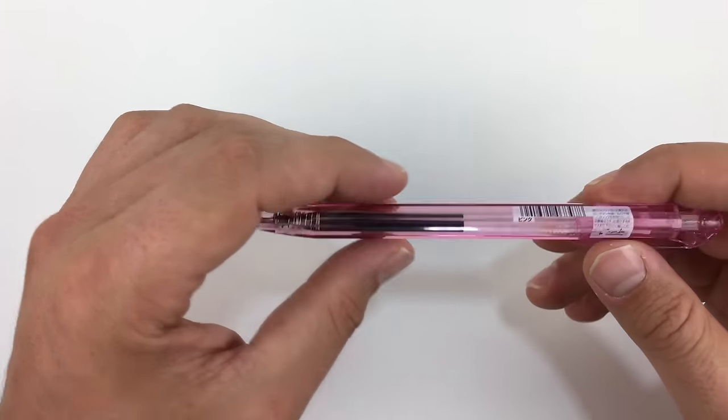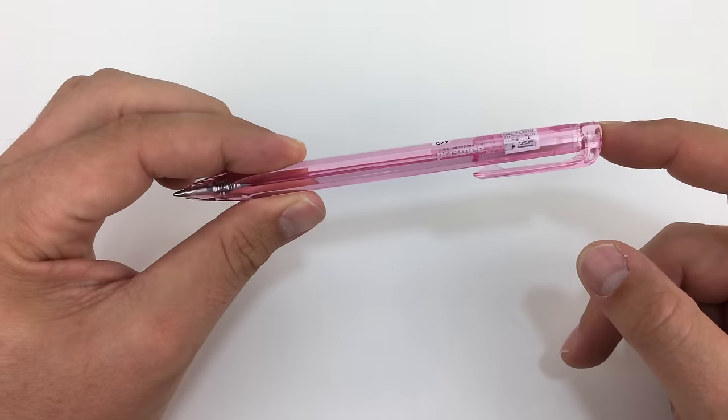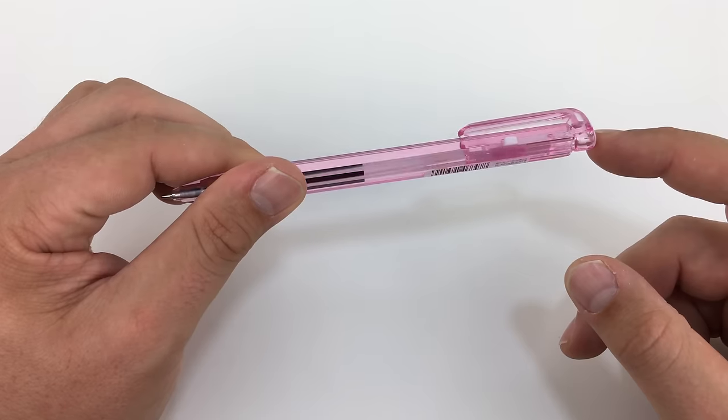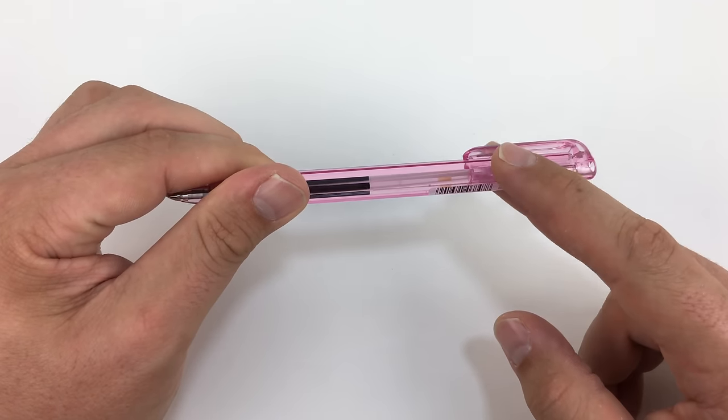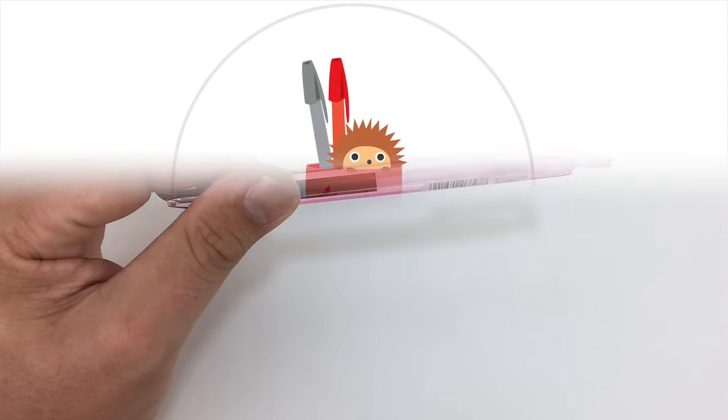So there you go. That is how to take apart and potentially refill your Prismy pen. Thanks a lot. See you next time.